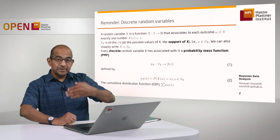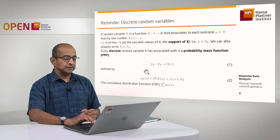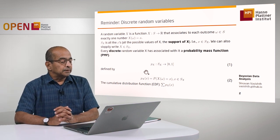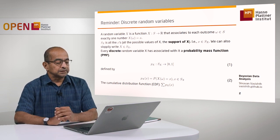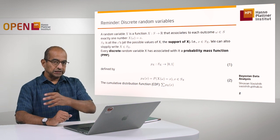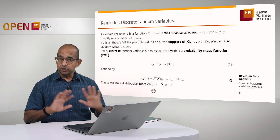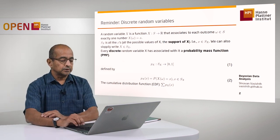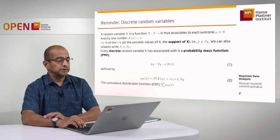In the discrete case, we had a probability mass function associated with this particular set of outcomes — the support of X — and each of those elements was mapped onto a probability. The cumulative distribution function is the sum of all the possible values ranging from X downwards. This was the whole story with discrete random variables, which I showed you earlier with the help of two examples: the Bernoulli and the binomial.